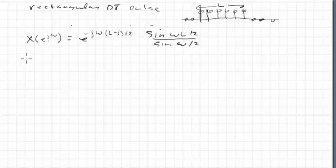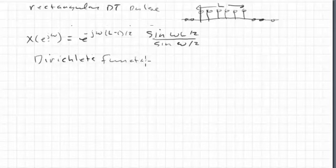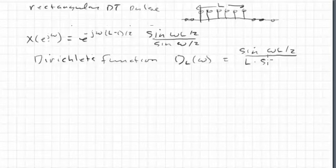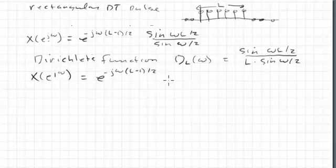All right, well, the first thing I want to mention is that if you recall, we talked earlier, I think almost a week ago, we talked about this thing called Dirichlet's function. And it was defined as d sub L of omega is sine omega L over 2 over L sine omega over 2. This should look really familiar. That's what we have here. Dirichlet's function, people just don't name functions unless they show up a lot. This one shows up a lot. So we can write our Fourier transform in terms of Dirichlet's function. The only thing we don't have is an L in the denominator. So I have to put an L here to get the amplitudes right, d L of omega.